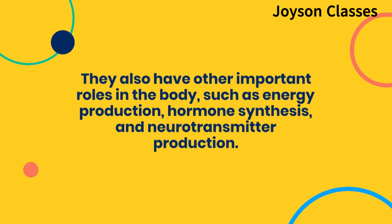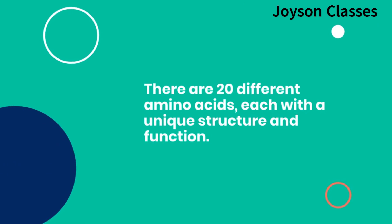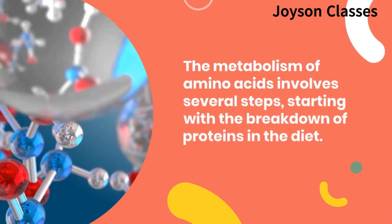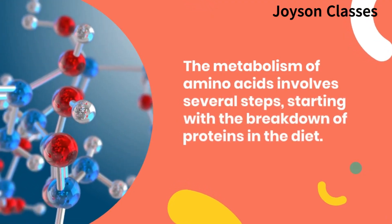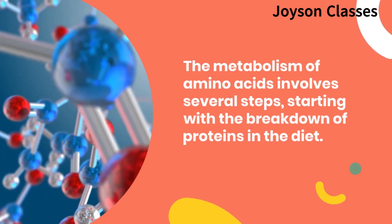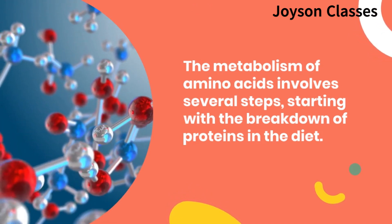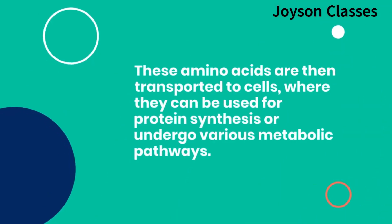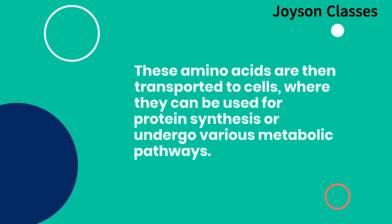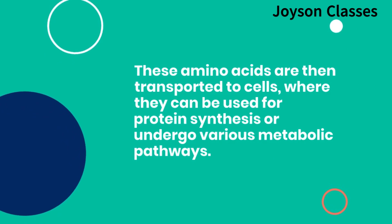There are 20 different amino acids, each with a unique structure and function. The metabolism of amino acids involves several steps, starting with the breakdown of proteins in the diet. These amino acids are then transported to cells, where they can be used for protein synthesis or undergo various metabolic pathways.